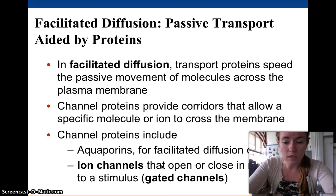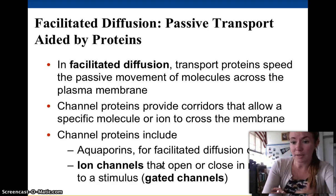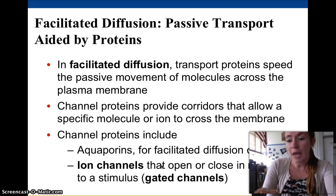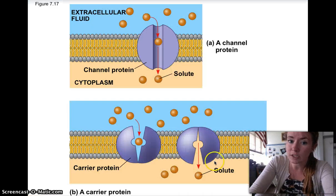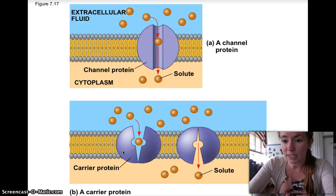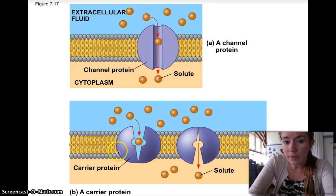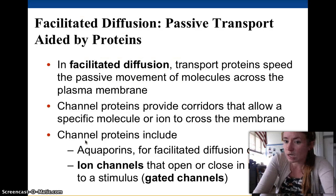Aquaporins allow for 3 billion water molecules per second — something like that — so that's a lot of water molecules, and they're water-specific, so only water can pass through. Water can't pass through on its own because it's polar, so it can't pass through the hydrophobic tails.